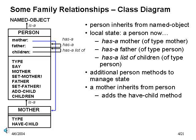We see that mother inherits from, or is-a, person, and only provides one additional method: have-child. It also overrides or extends the type method, as required of all classes in our system.